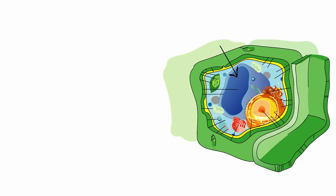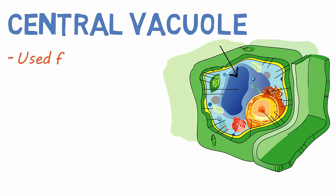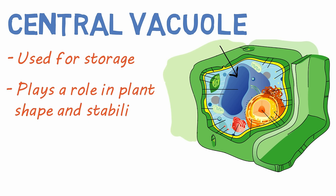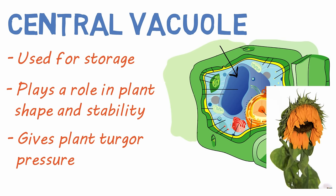Plant cells have a large central vacuole, and this vacuole is used for storage, but it also plays a large role in plant shape and stability. It gives plants turgor pressure. Underwatered plants don't have full central vacuoles, and thus look limp or wilted.